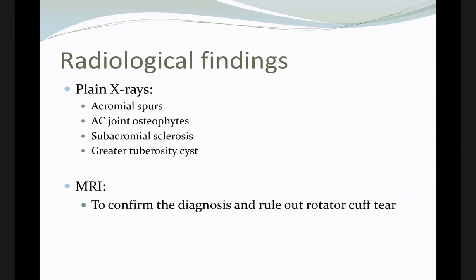X-ray can show acromion spurs, osteophyte changes, and arthritis in the area. MRI will confirm the diagnosis, tell you if there is bursitis in the subacromion area, and also assess the integrity of the rotator cuff, including any tear in the rotator cuff tendon.